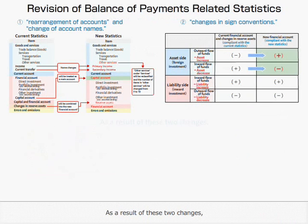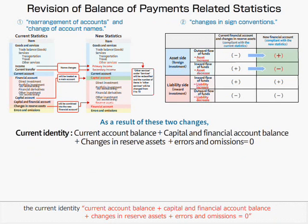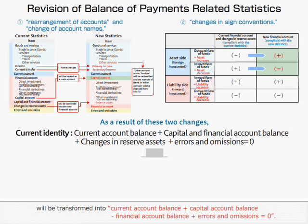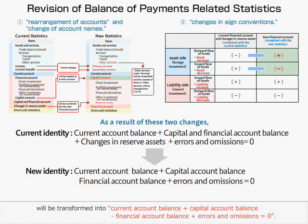As a result of these two changes, the current identity — Current Account Balance plus Capital and Financial Account Balance plus Changes in Reserve Assets plus Errors and Omissions equals 0 — will be transformed into: Current Account Balance plus Capital Account Balance minus Financial Account Balance plus Errors and Omissions equals 0.